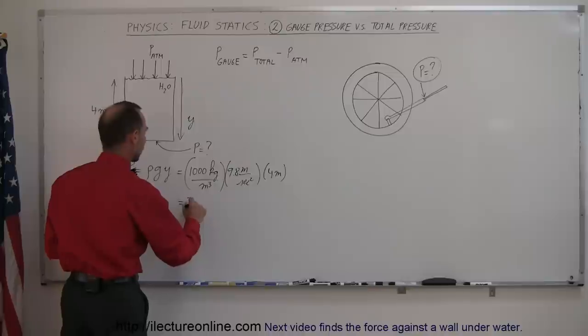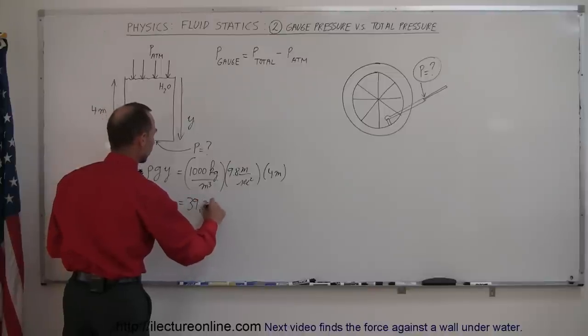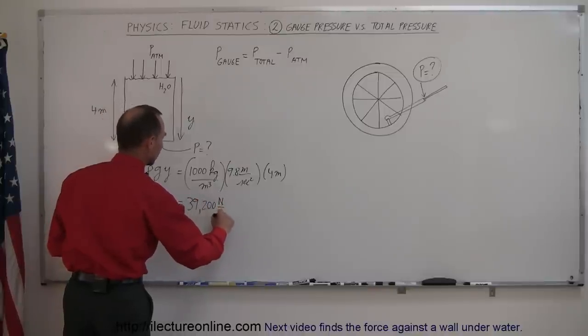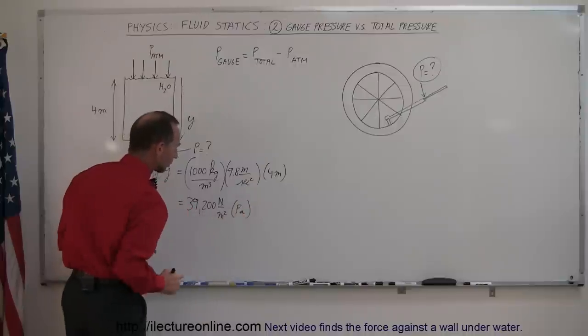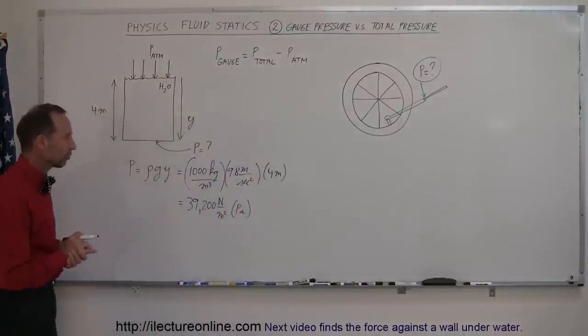And let's see here, that would then be equal to 39,200 newtons per square meter, or pascals, as we like to call them. That's units for pressure.